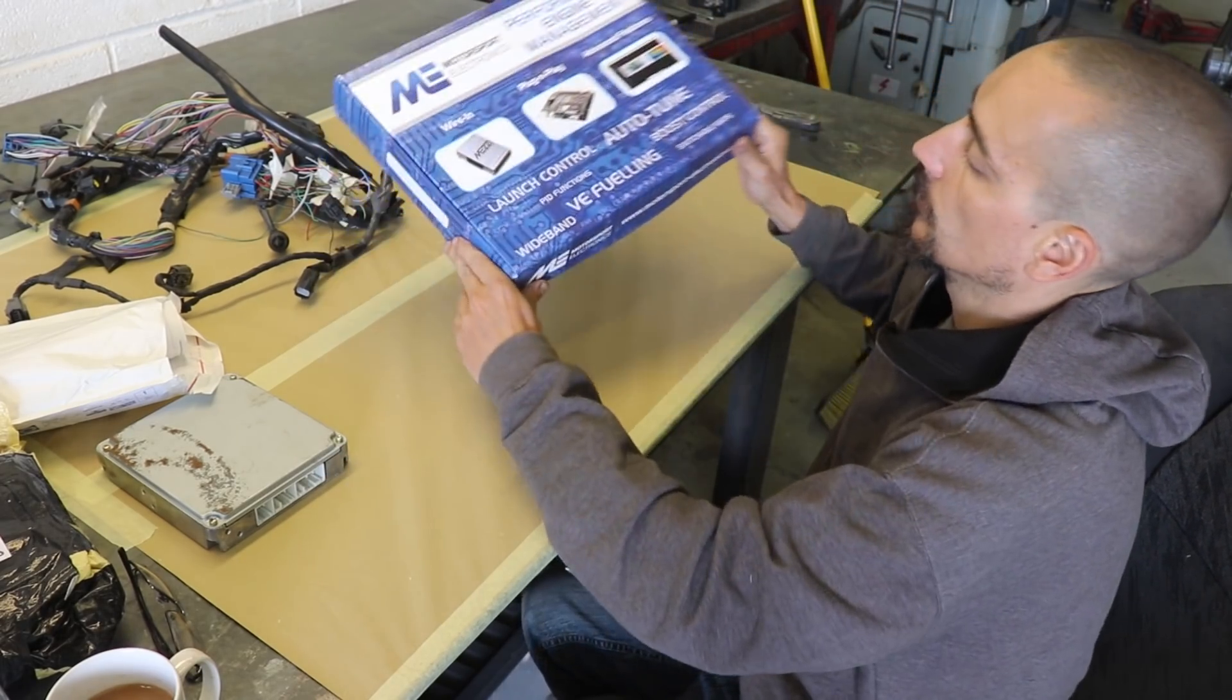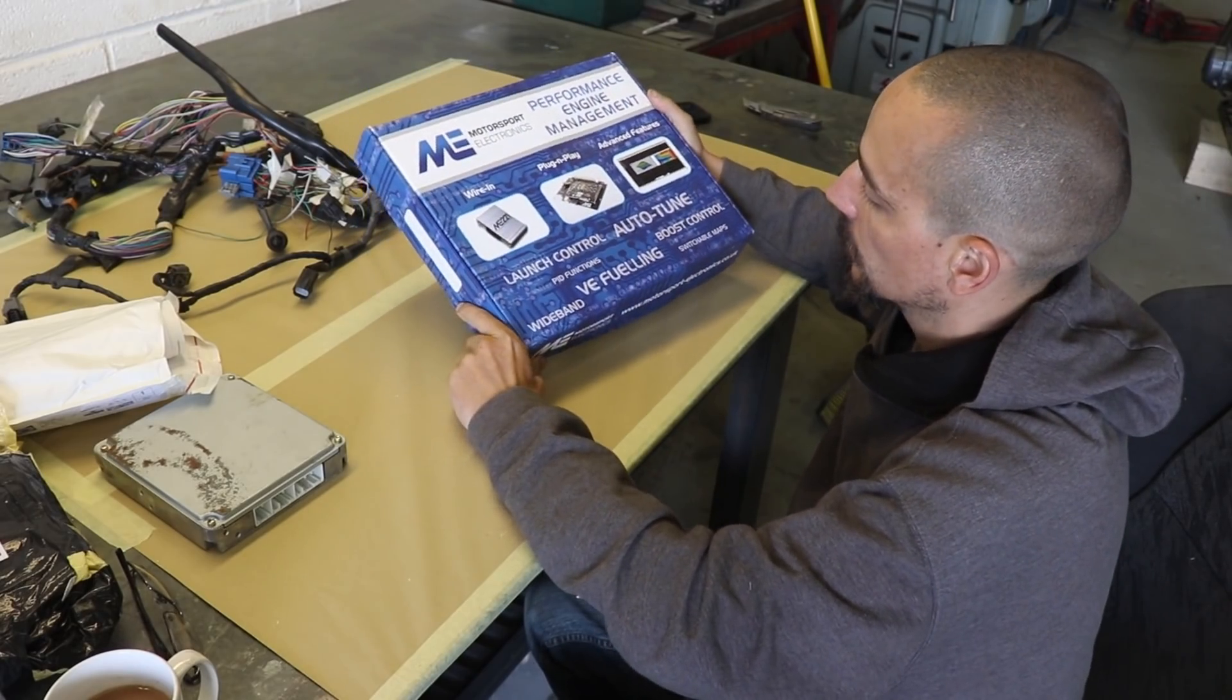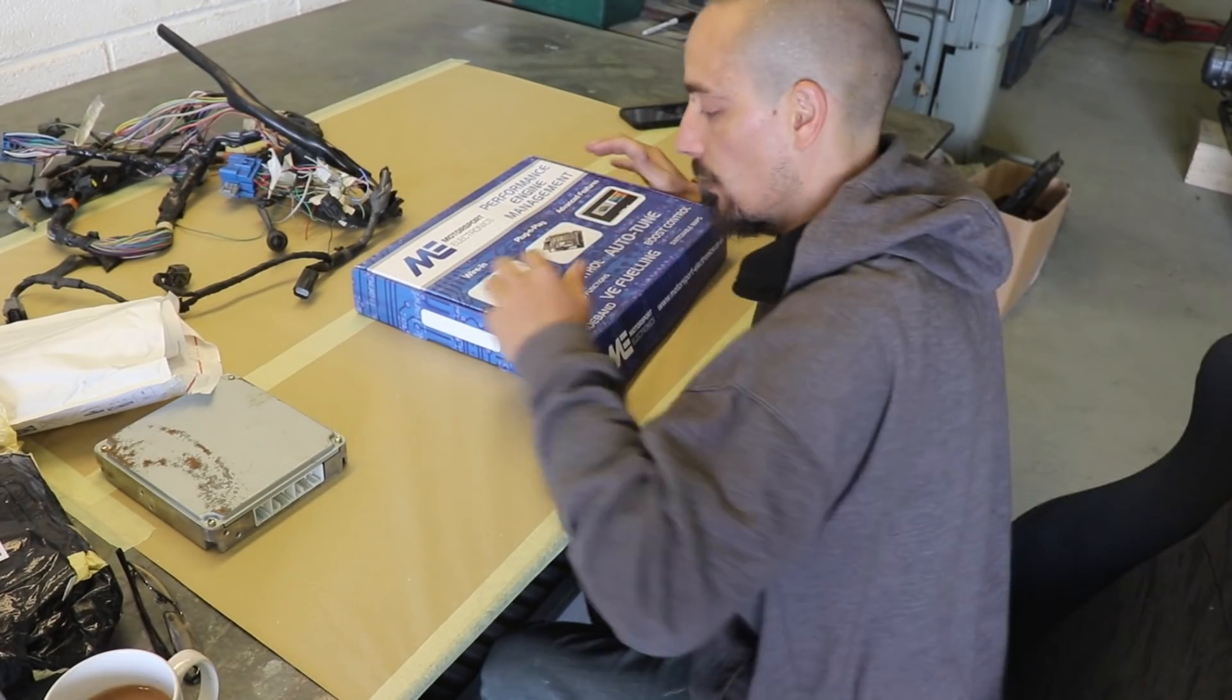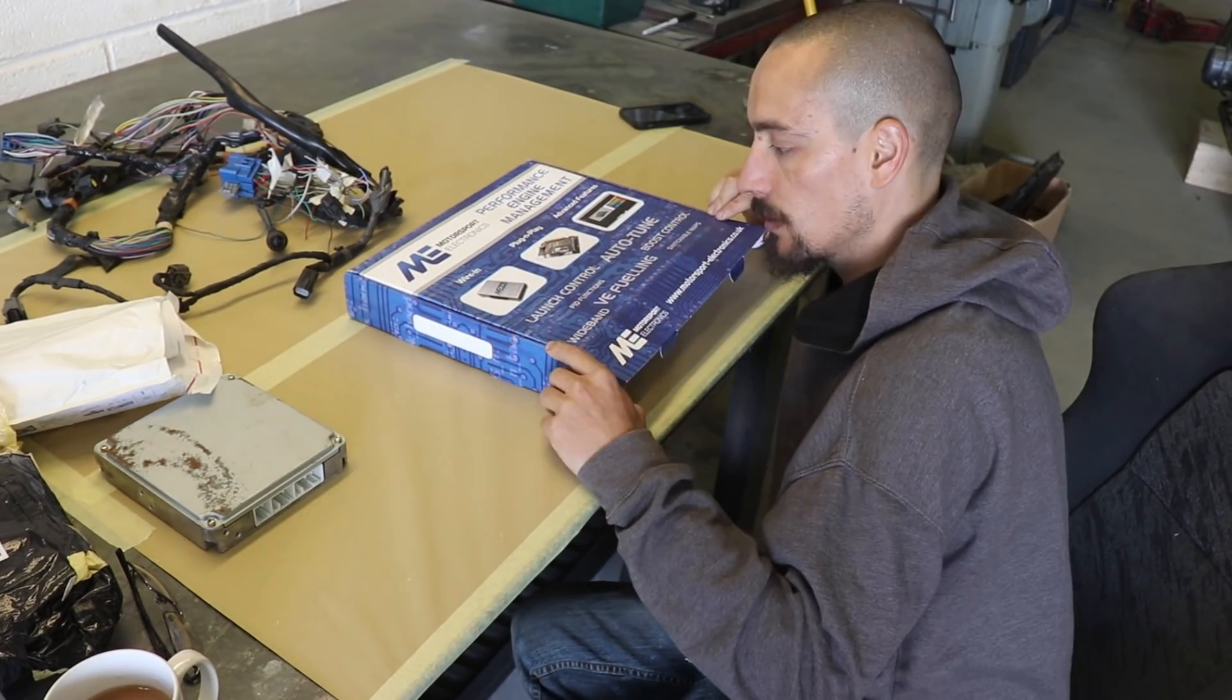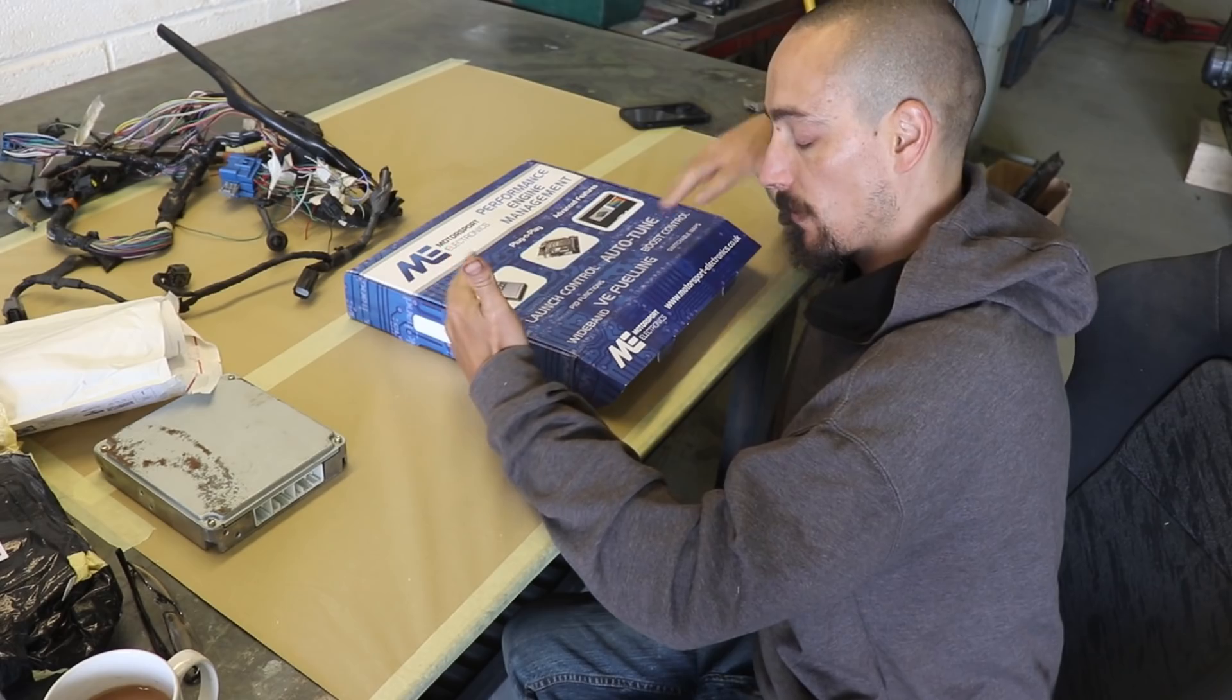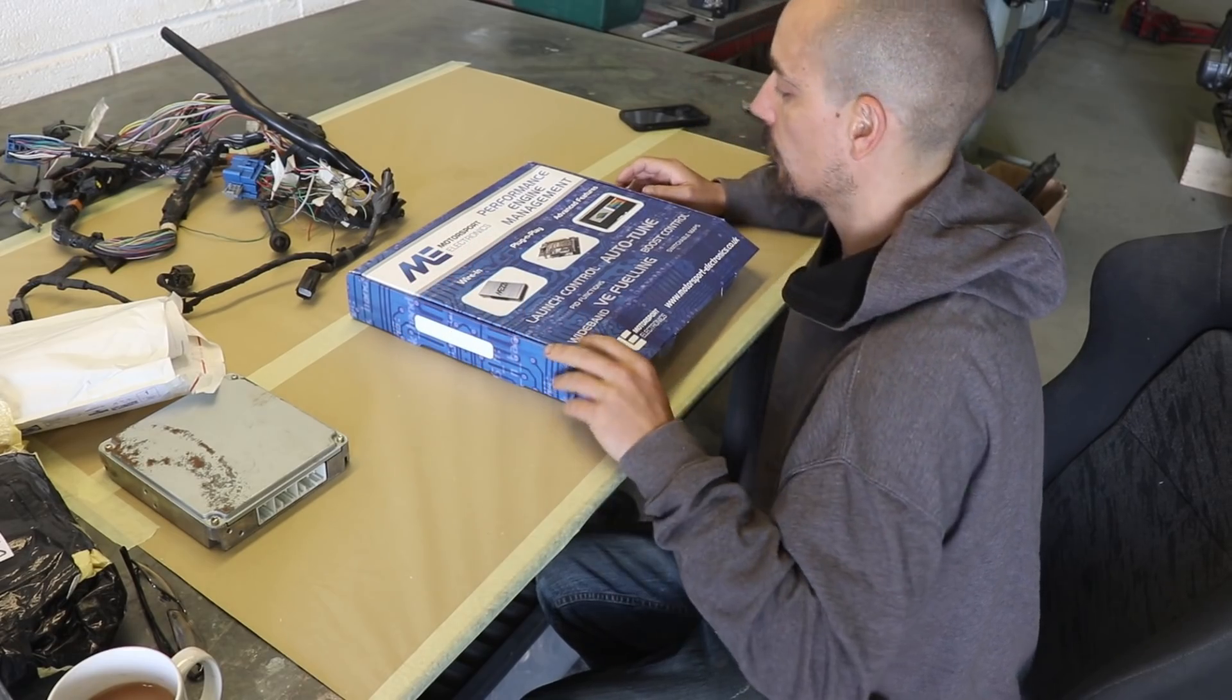So I went for one of these. This is from Motorsport Electronics. It's not actually the ME221 which is their flagship ECU that they do for MX5 stuff. This is the next one up. Initially I just wanted the cheapest option but they did me a really good deal on this and there were some things that this featured would just make the installation a little bit easier.